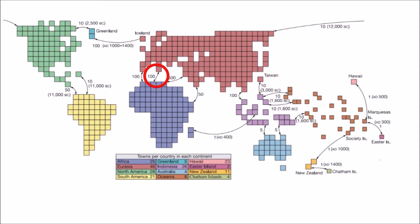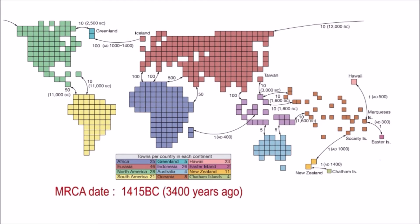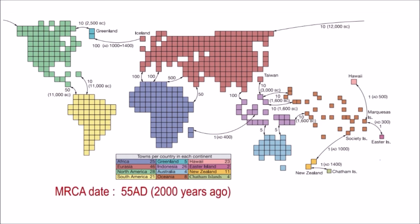The model also accounted for a limited amount of migration out of towns, countries, and continents. The arrows in the diagram show the number of persons leaving a particular zone per generation. According to their calculations, if 5% of individuals left their hometown per generation and 0.05% migrated out of their home country, then the most recent common ancestor of everyone presently alive would have lived in 1415 BC — around 3,400 years ago. However, these migration estimates are far too conservative; for example, it assumes only 50 people leave per country in densely populated Eurasia. If migration among towns is increased to 20% and other numbers are increased by a factor of 5 or 10, then our most recent common ancestor lived around 85 AD — roughly 2,000 years ago.